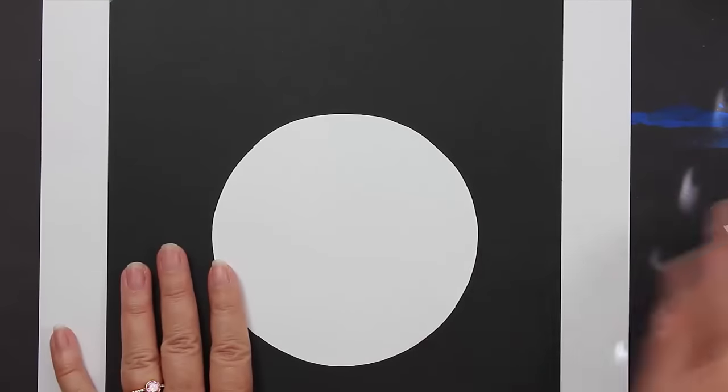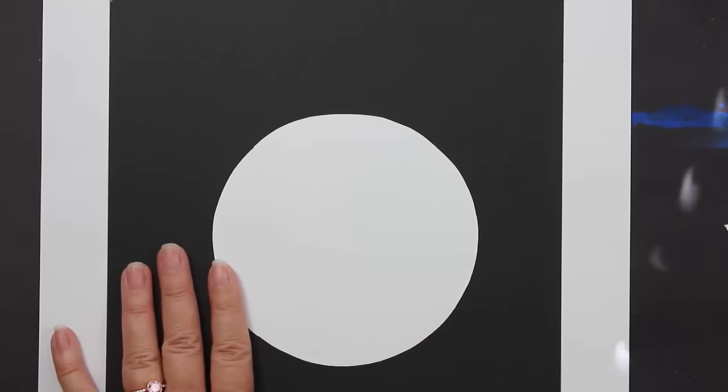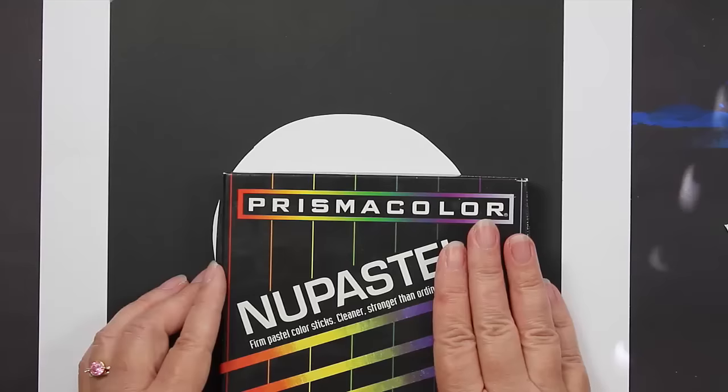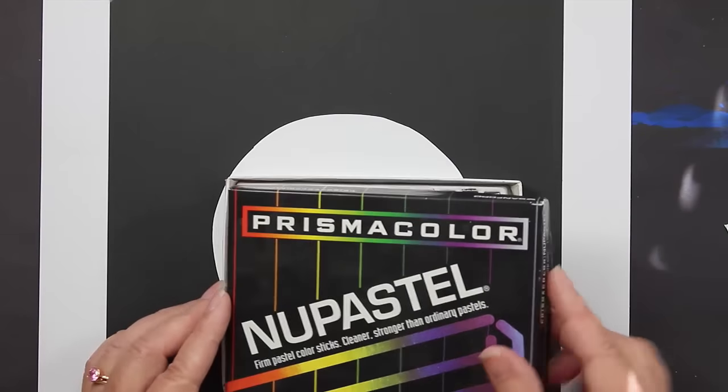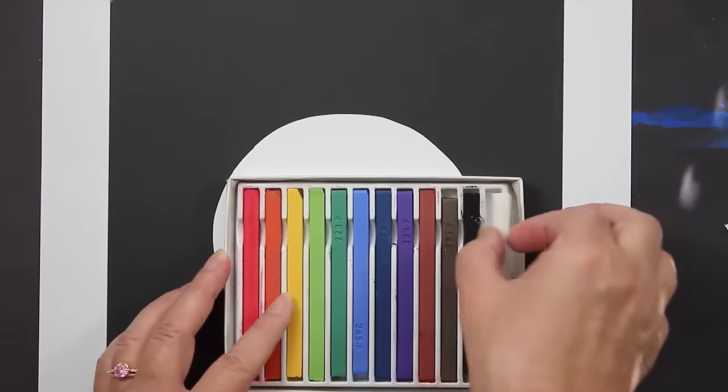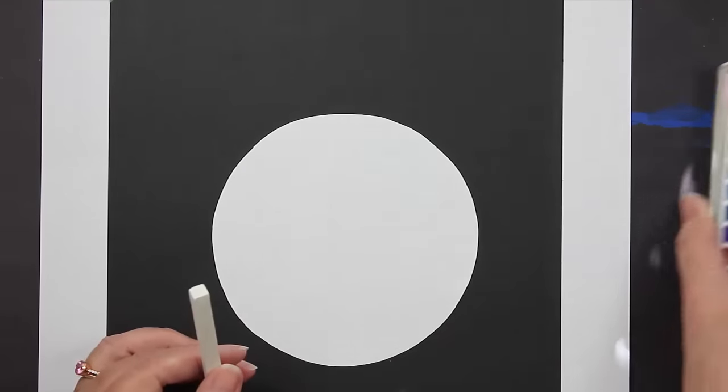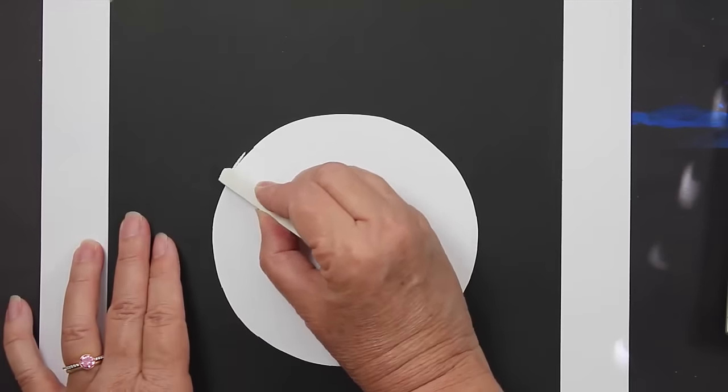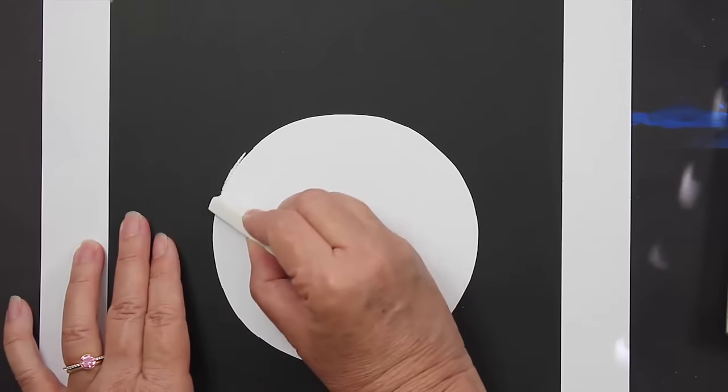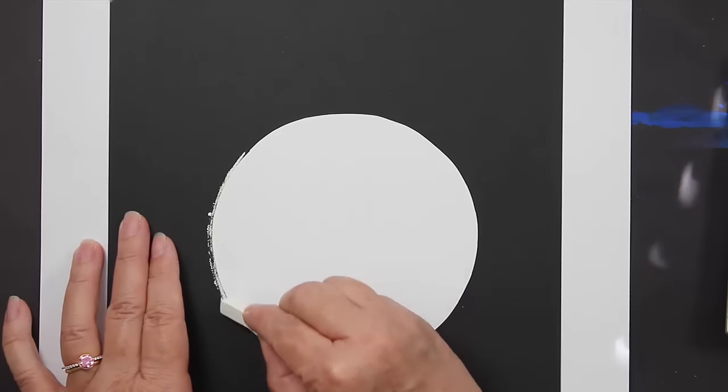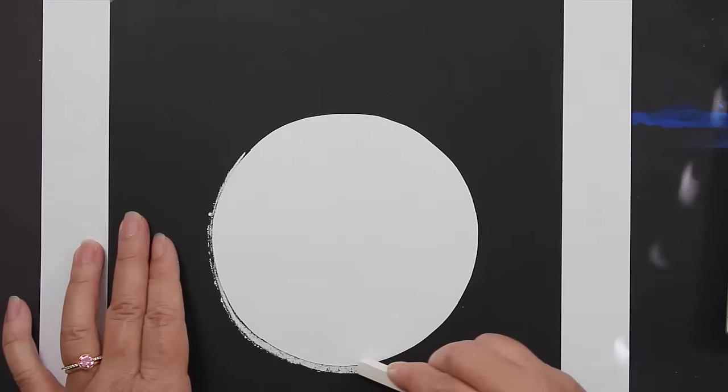All right, now I'm going to take my chalk pastels. And if you don't have chalk pastels, that's okay, just use sidewalk chalk that will work also. And I'm going to choose my white. Ooh, this is a new pack, I haven't used this one before. And what I'm going to do is I'm going to go along the edge and I'm going to press pretty firmly along the edge on the black paper just like this.